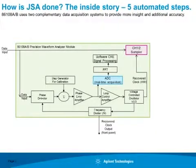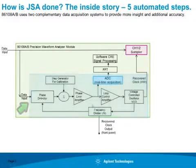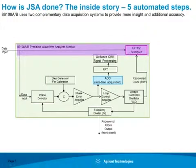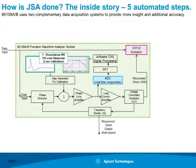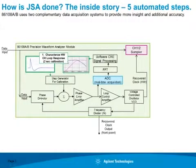So how does the DCA use Option JSA? Here's a block diagram of the 86108A and B module. Data comes in on the left-hand side, there's a pick-off or tap, and a small amount of the signal is routed into the clock recovery circuit shown at the bottom. Most of the signal is sent directly to the channel 1 and 2 sampler, which is the 50 GHz sampler in the case of the 108B Option HPW. When JSA is enabled, a step generator is launched into the clock recovery circuit to characterize it. So under the operating conditions the user has set up, we very accurately know what the JTF and the OJTF look like.